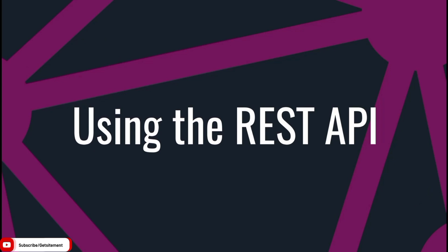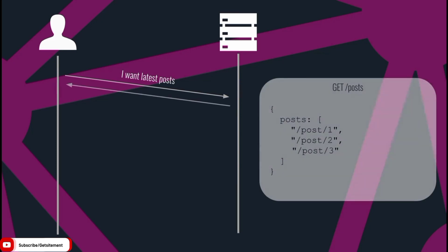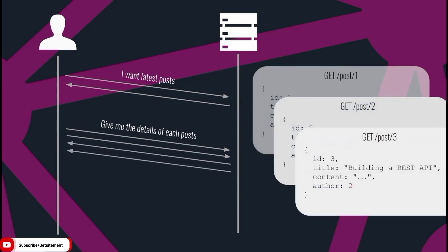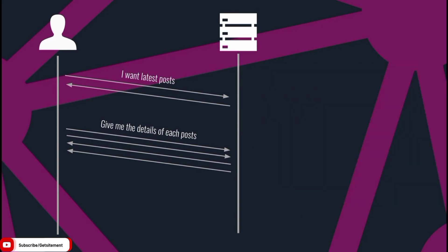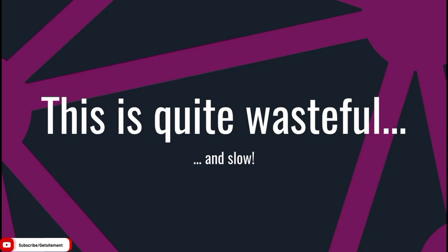This architecture seems fine, but let's actually use it. I want to render a list of blog posts showing the title of each post and the name of the author. We start by requesting the latest blog posts, getting back an array of references. Then we need one request per blog post to get the title and contents. But the response contains a reference to an author, so we need another set of requests to get each author's name. In real life applications, multiple requests add a lot of latency, which is not great for mobile connections.